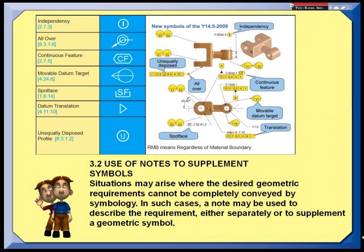In the 1994 standard, in section 3.2, we're told that you can always use notes. Situations may arise where the desired geometric requirements cannot be completely conveyed by symbology. In such cases, a note may be used to describe the requirement. So we have these seven new symbols, but we can handle most of them with notes.